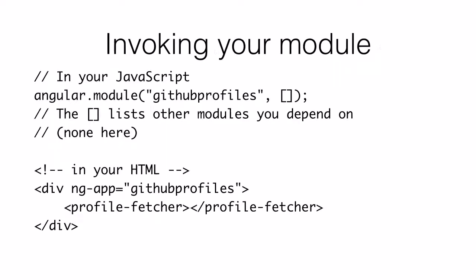How do we actually invoke our module? In the JavaScript, we have angular.module('githubProfiles', []) — the array lists other modules this depends on, in this case none. Inside the HTML, we'll see 'div ng-app=githubProfiles', telling Angular.js to look in the githubProfiles module and, within those tags, look for directives declared on that module. Sure enough, there's the profile-fetcher directive being invoked.